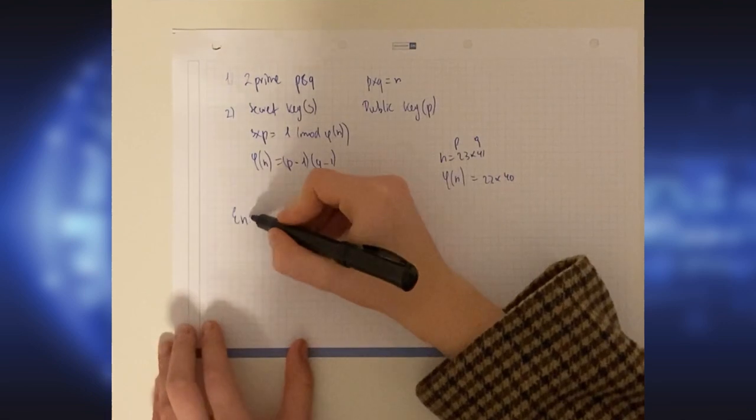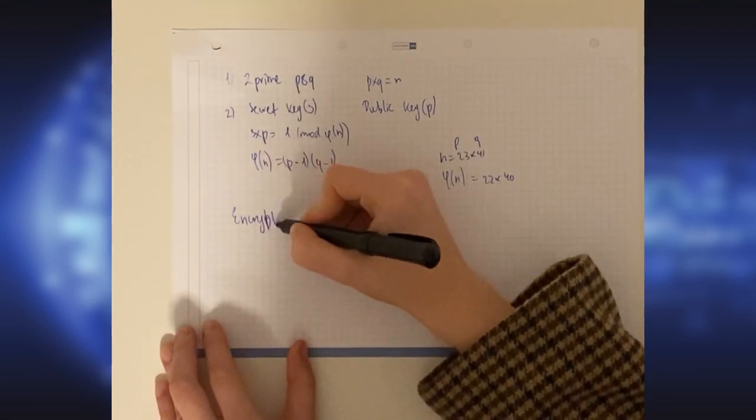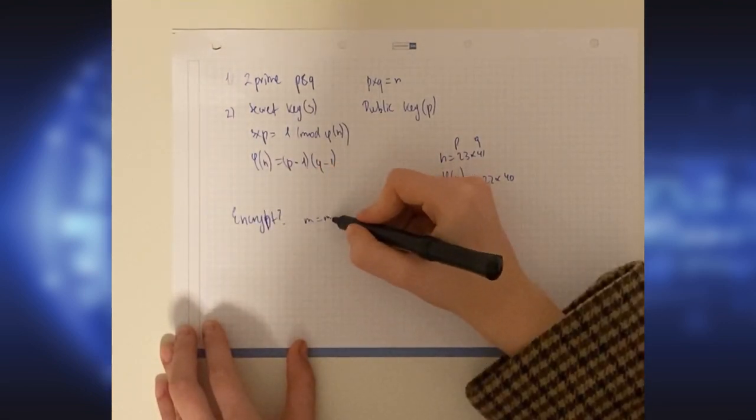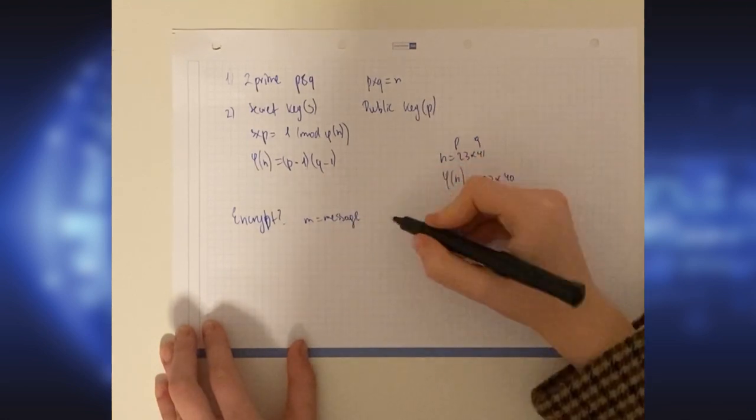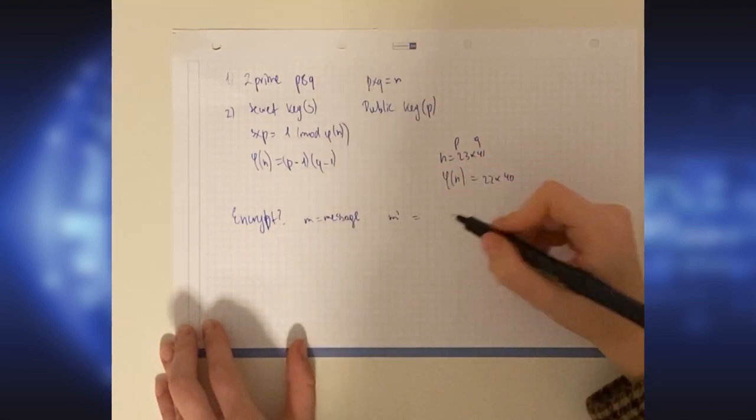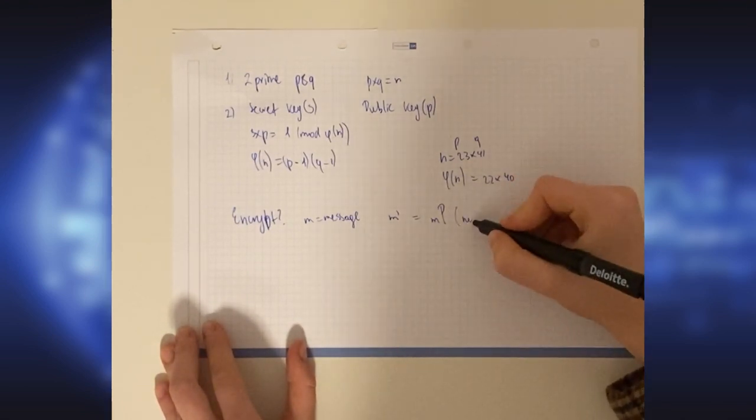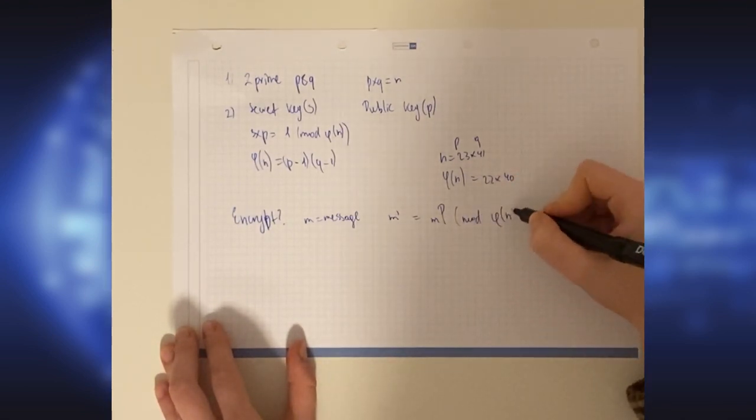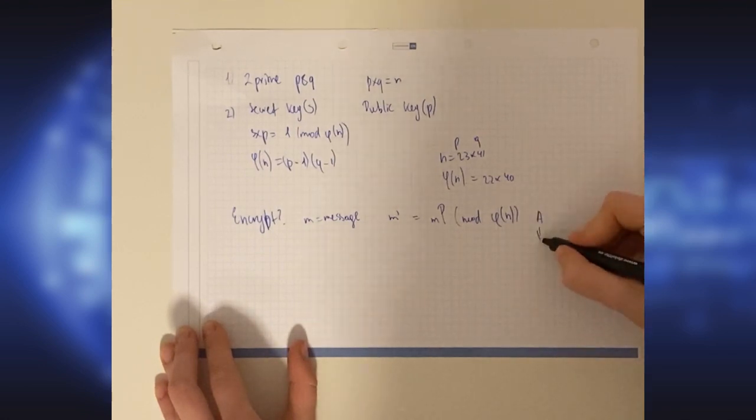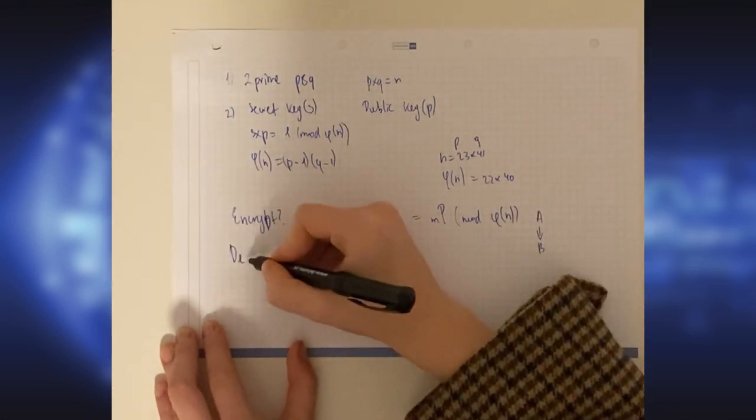So how do we encrypt? Let's say we have a message M, and we send M prime, which is encrypted by taking M to the power of P, our public key, modulus N. We send this encrypted message.